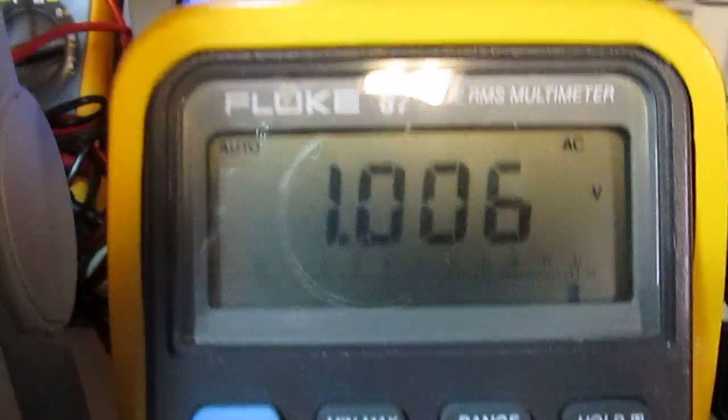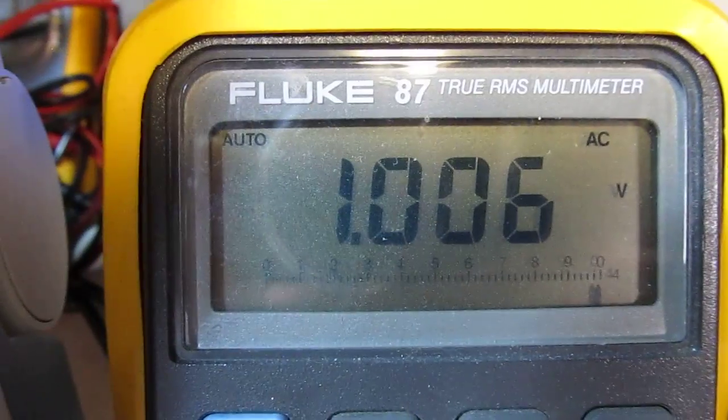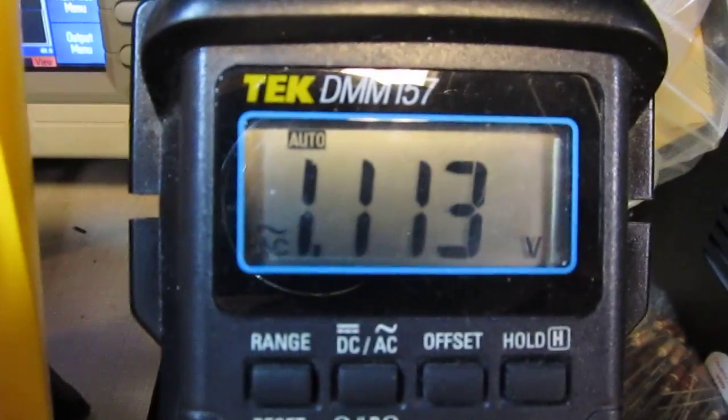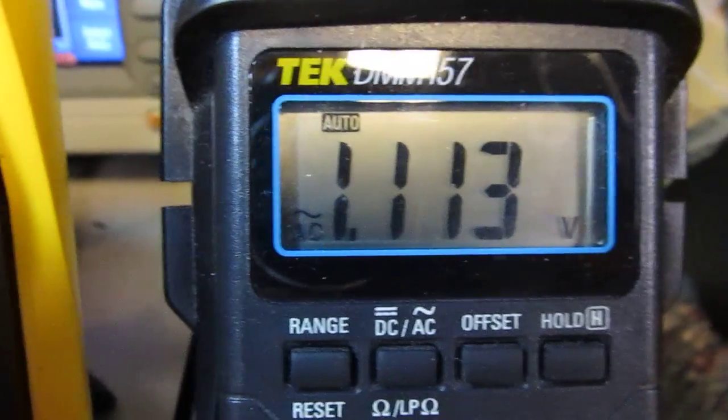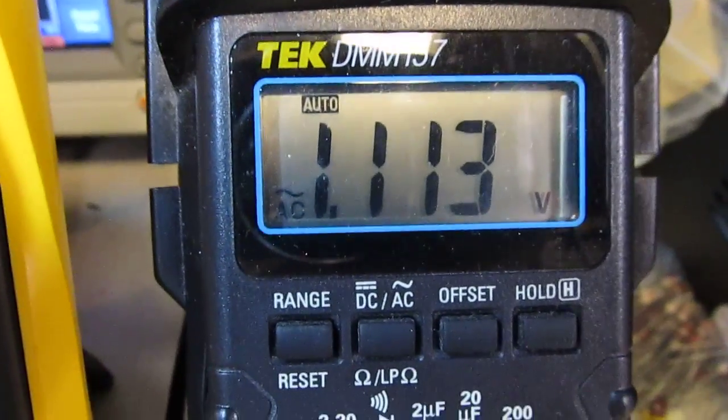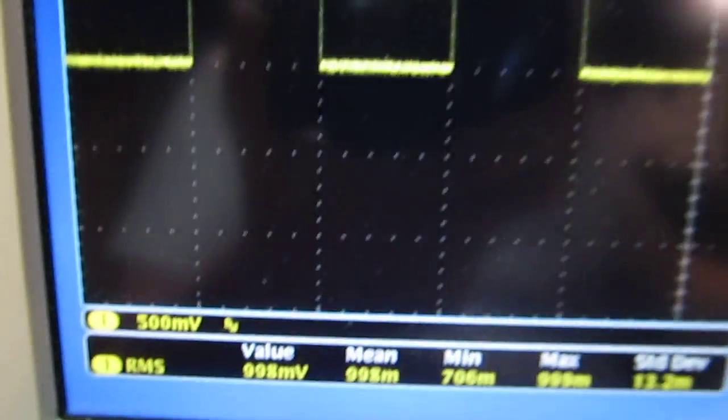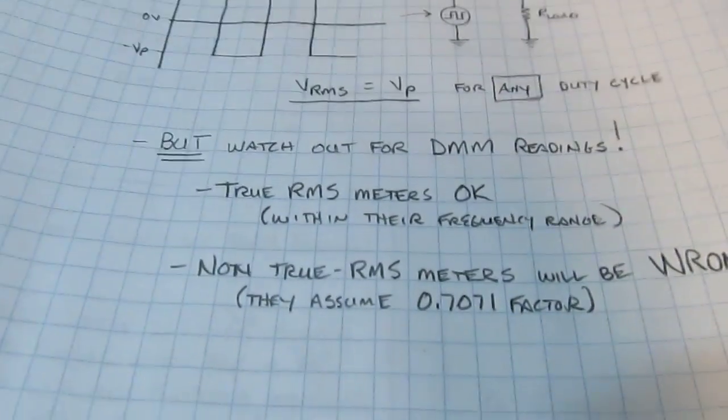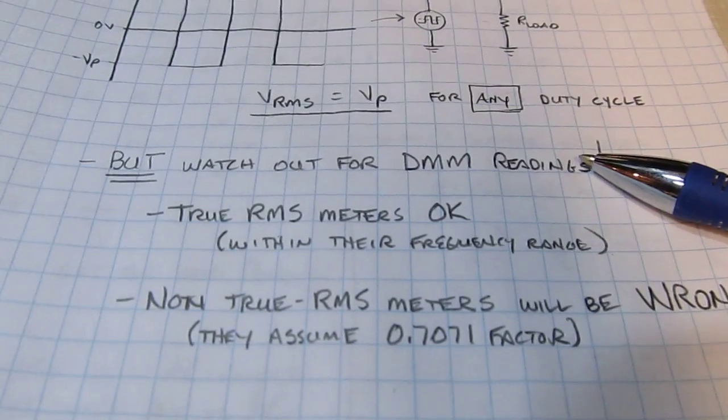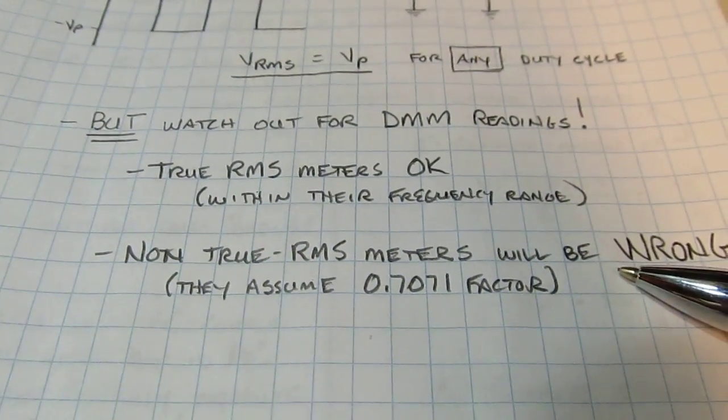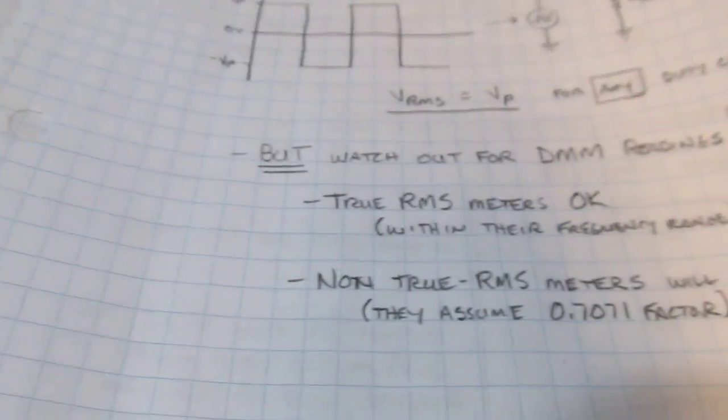And we can see that here. I've got that same 2 volt peak to peak. My true RMS reading multimeter reads at about 1 volt, which is what it should, because this is going between plus and minus 1 volt. So that's reading that. But the non-true RMS reading meter is not reading it correctly. That's reading a little bit high because it's improperly using that 0.707 factor, because this signal is not a sine wave. If we look at the scope, it's a square wave centered around 0. And if we look at the reading down here, we can see that that is reading just about 1 volt as well. So the scope is doing it right. The true RMS meter is reading it correctly. But the non-true RMS reading is not. So the caution here is to watch out for DMM readings. True RMS meters will read fine, but non-true RMS readings will be wrong because they assume that 0.707 factor.